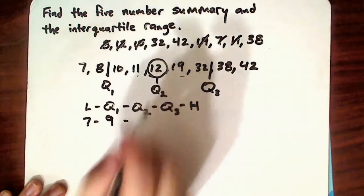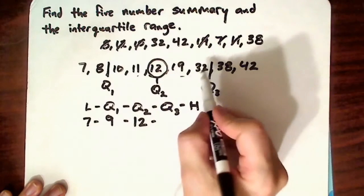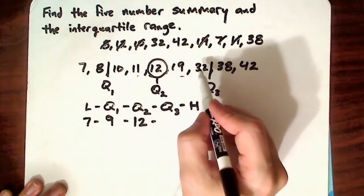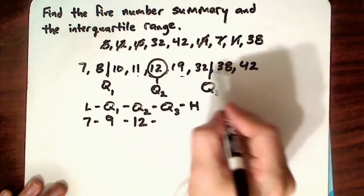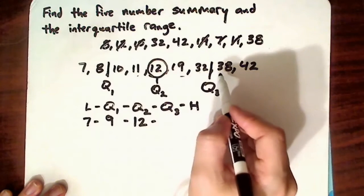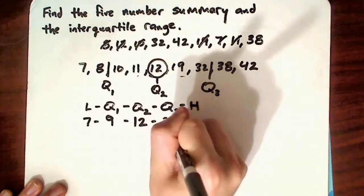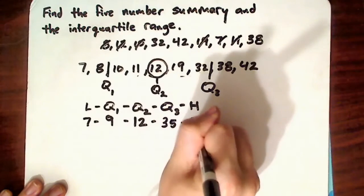Second quartile, which is also the median, is just 12. You don't have to calculate that. Here, take the average of 32 and 38. So that would be, add them together, it's 70, divided by 2, that's 35. And then the high is 38.